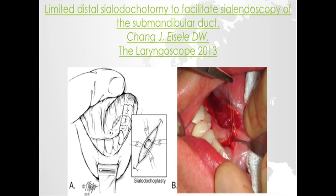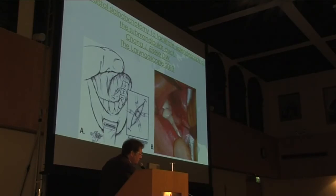Based on this video sequence, you can understand the recent publication of Chang and Isil, where they described a limited distal sialodochoplasty to facilitate sialendoscopy of the submandibular ducts. You may have two incisions: the first anterior to make a sialodochoplasty and favor good introduction of the sialendoscopic unit, and the second incision posterior in the hiloparenchymal region. That can be the future of this technique.